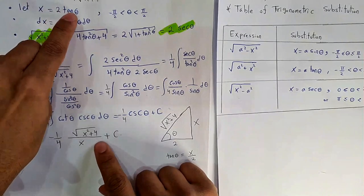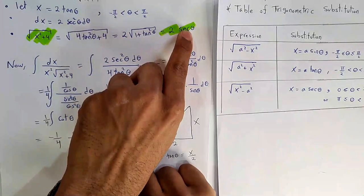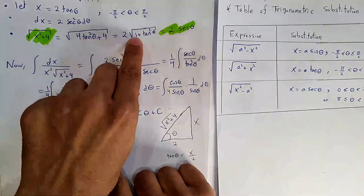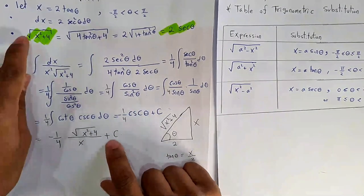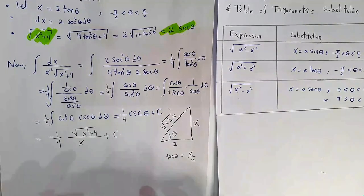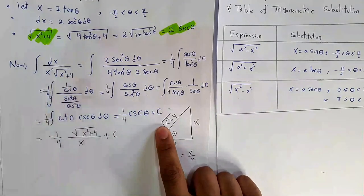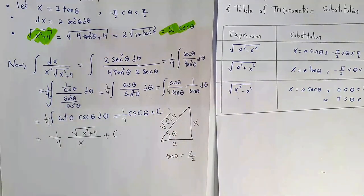Quick notes: if you input 2 tan θ, you get 2 sec θ, coming from the identity 1 + tan²θ = sec²θ. If your work is correct, you will break the root, and the root will appear in the triangle.